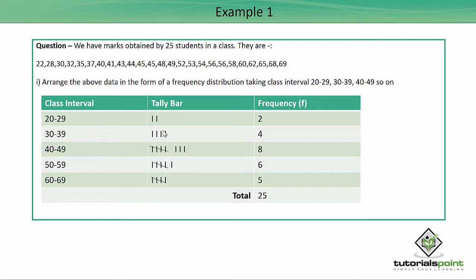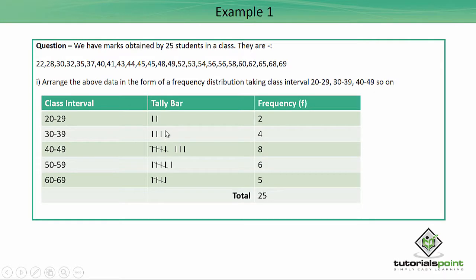We'll start with the tally bar. 22 falls between class interval 20 to 29, so I'll put one tally bar there. 28 is the next, also in 20 to 29. Then 30 comes in the 30 to 39 class interval, followed by 32, then 35 and 37 — that gives four tally bars in the 30 to 39 interval.